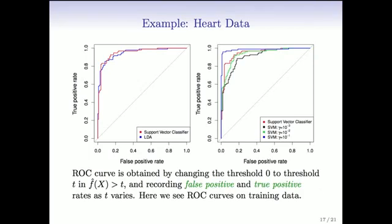We've learned about support vector machines in their full generality. Let's see how they work on a simple example, which is the heart data, where we've got a bunch of variables, not too many, ten or so variables, and there's two classes: heart disease or no heart disease, and we use the support vector machines to classify.